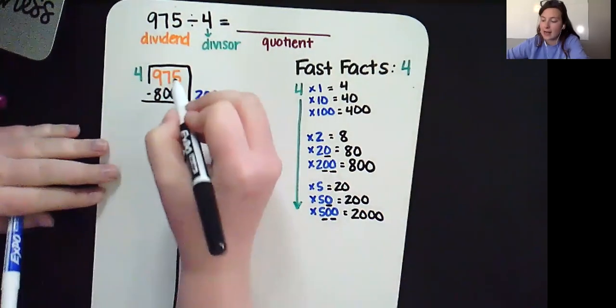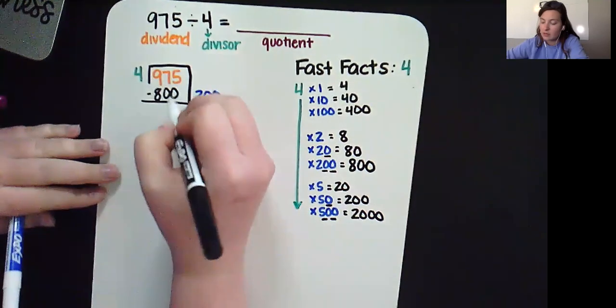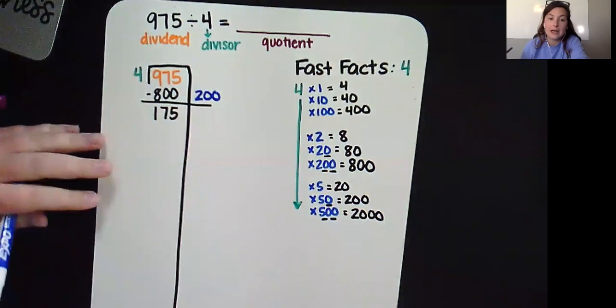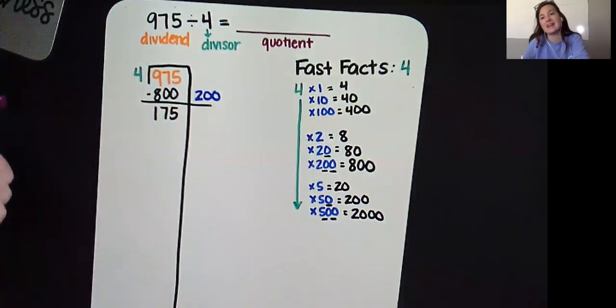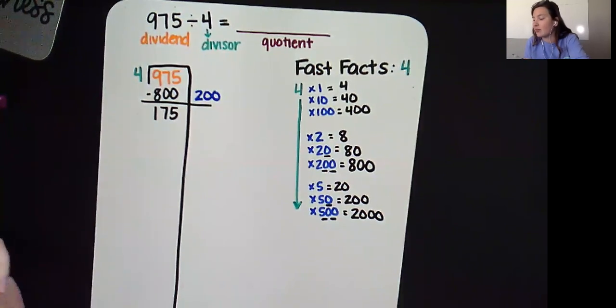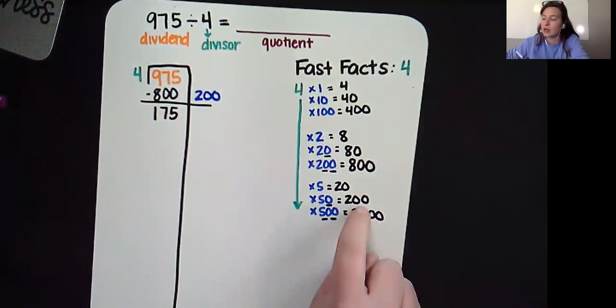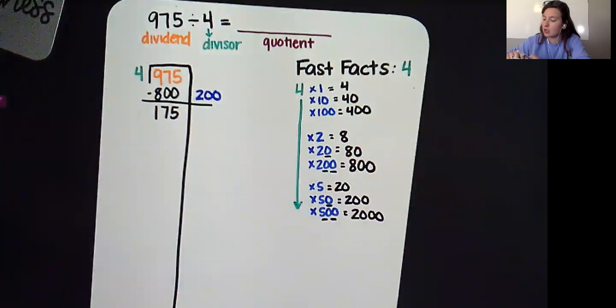Now I'm going to subtract 5 minus 0 is 5, 7 minus 0 is 7, and 9 minus 8 is 1. My new target number is 175. What is the closest I can get to 175 without going over? Well, I see 200. That's pretty close to 175, but I went over. So I guess I'm going to go with 80.